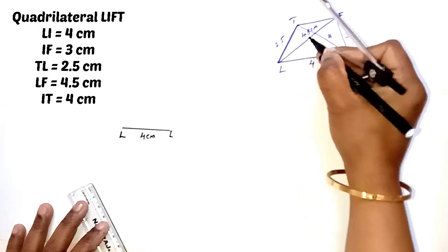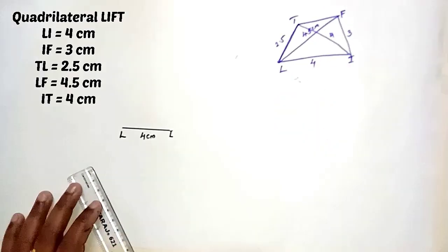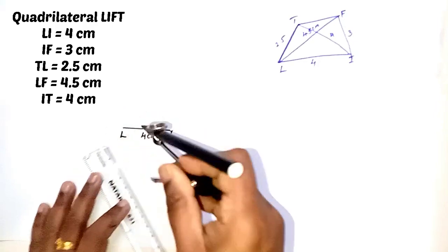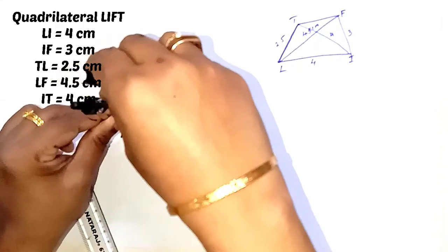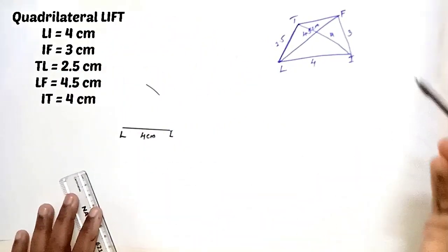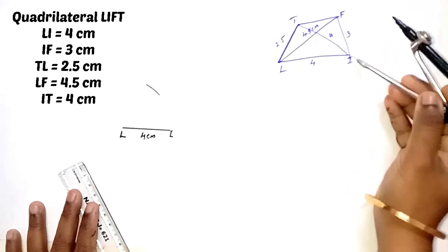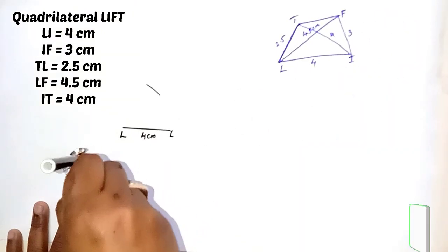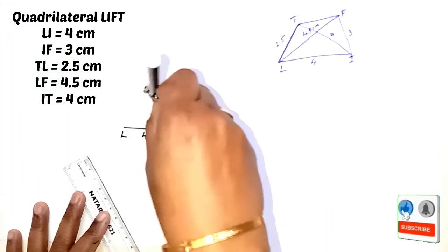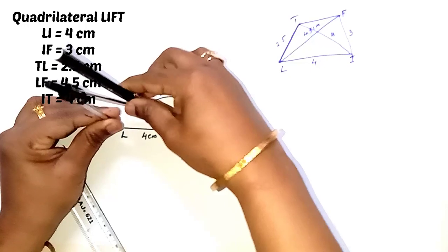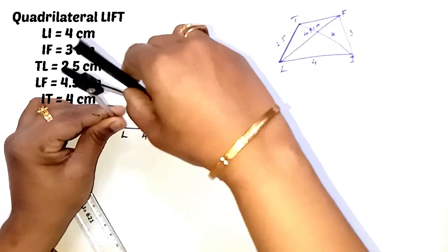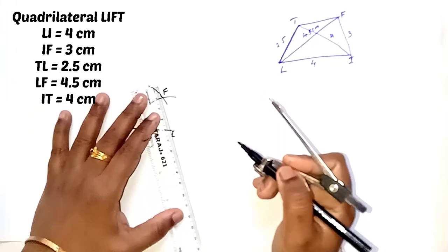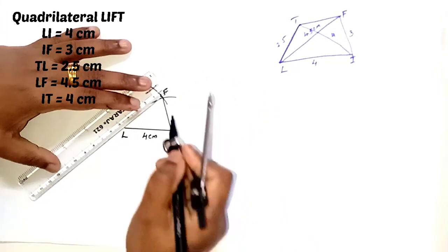LF is 4.5 cm. So with center L, draw an arc with radius 4.5 cm. Now F is 3 cm away from I. So with center I, draw an arc with 3 cm radius. Now this is the point F. You can join I and F, and L and F also.